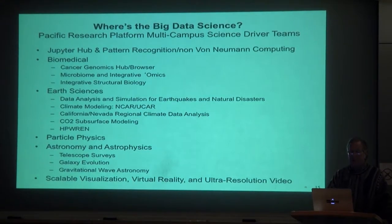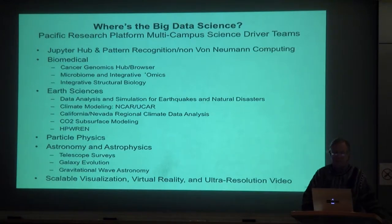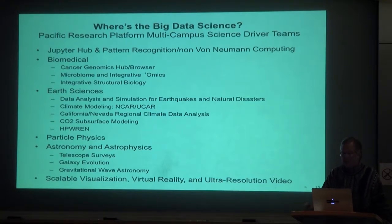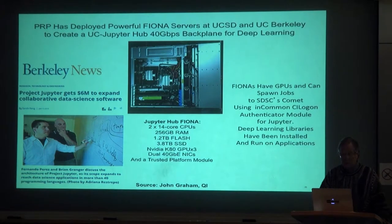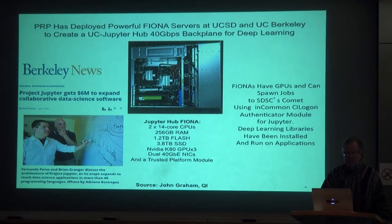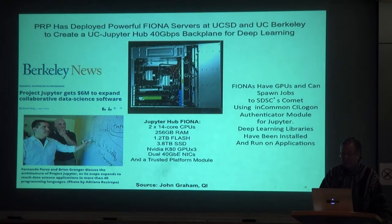Where is all this big data coming from? There's a project called JupyterHub at Berkeley and our Pattern Recognition Non-Von Neumann Computing Lab here. The domains include biomedical, earth sciences, particle physics, astronomy and astrophysics, and scalable visualization. We've been building these Fiona boxes — quite expandable — here's one with 28 CPU cores, flash storage, and a lot of NVIDIA: 15,000 NVIDIA cores and dual 40-gigabit NICs. It's a 3U box that's essentially a supercomputer from a few years ago, for about $20,000 — roughly the cost of one grad student for one quarter.